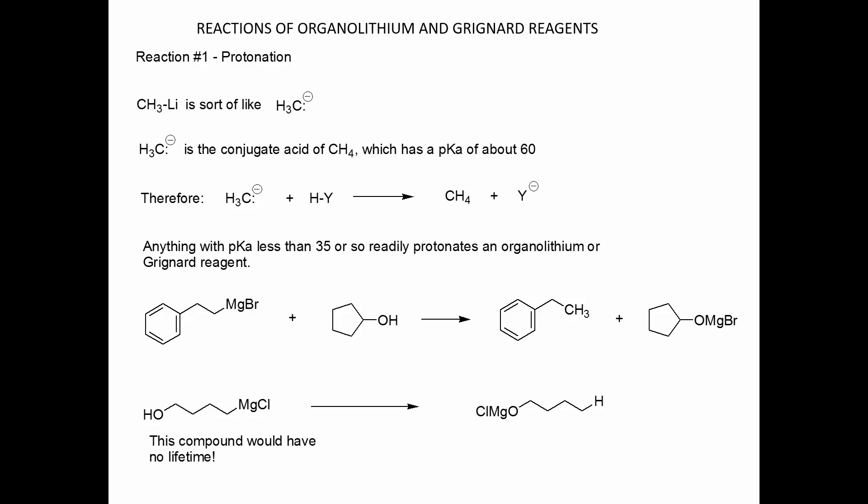Let's look at the reactions of organolithiums and Grignard reagents. Reaction number one is protonation. CH3Li is sort of like CH3 minus. CH3 minus is the conjugate acid of methane, which has a pKa of about 60. This is a very high number — on a logarithmic scale, this is 10 to the minus 60 moles. This means on planet Earth, all the methane molecules here, it's likely that not even one of them is deprotonated at equilibrium.